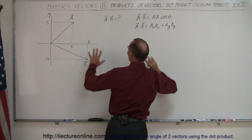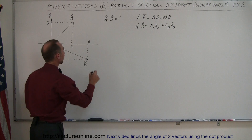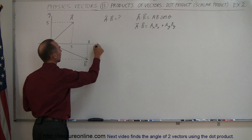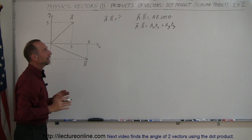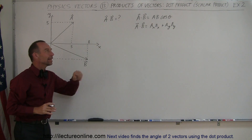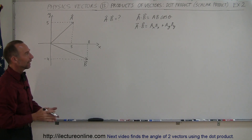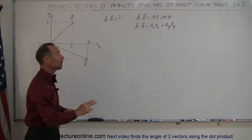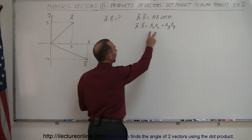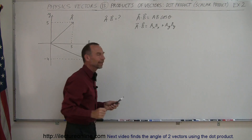Since we're only working in the X-Y plane here — this is the X axis, this is the Y axis — we can go ahead and not add the third term, A sub Z times B sub Z. So what we're doing here is multiplying the X components and the Y components together.